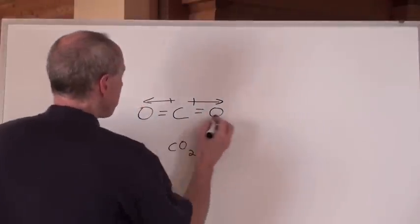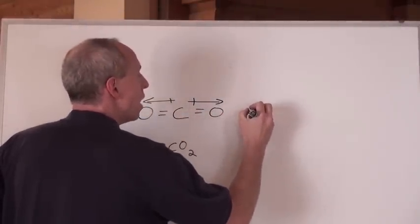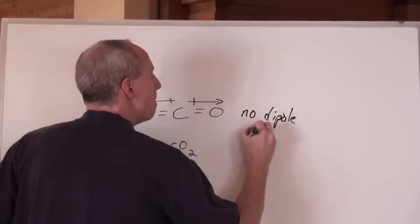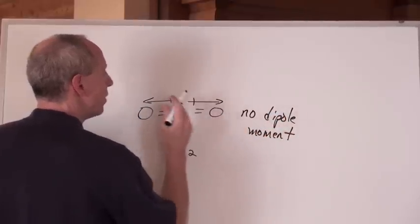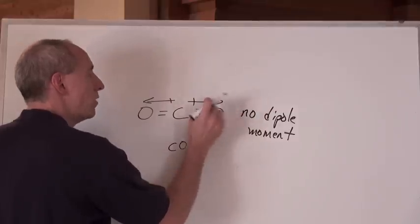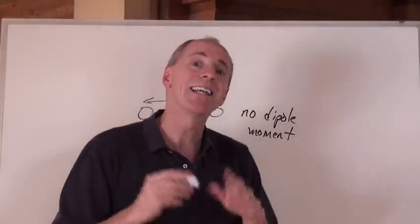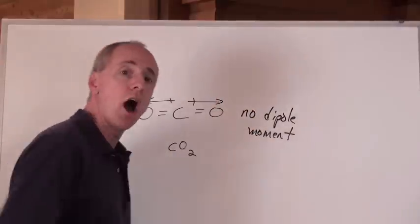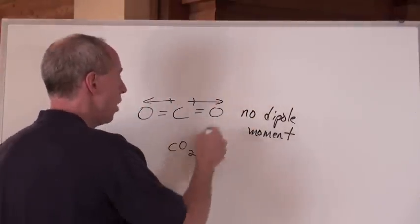So this molecule — CO2 — is said to possess no dipole moment. There's no situation where it's going to have partially positive and negative regions, because these arrows, these vectors, cancel out because they're the same magnitude in opposite directions. So that would be non-polar.